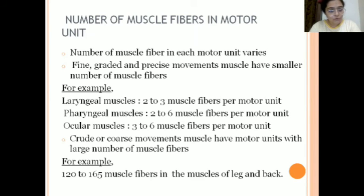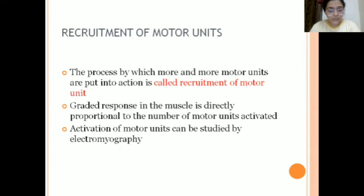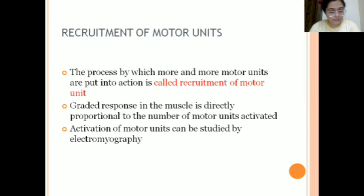For crude or coarse movements, such as in back and leg muscles, there are more muscle fibers per motor unit — for example, 120 to 165. Recruitment of motor units refers to the process by which more and more motor units are put into action. There is a graded response in muscle directly proportional to the number of motor units activated. The activation of these motor units is generally studied by electromyography.